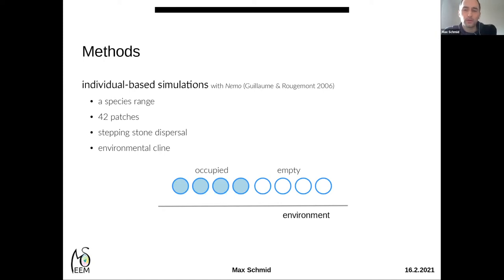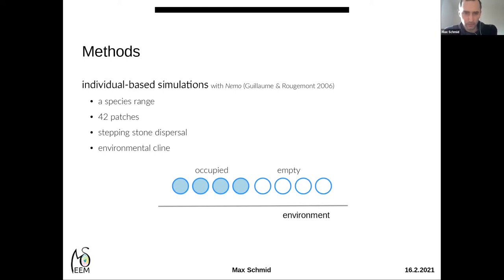Along these 42 patches we installed an environmental gradient, meaning environmental conditions increased from left to right. At the beginning of each simulation we assumed that only half of the patches were occupied — those on the left — while the other half were empty. This was the arena for our hypothetical range dynamics.